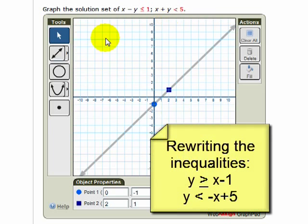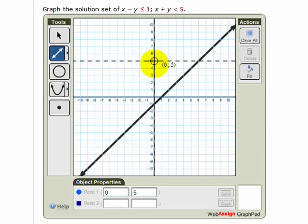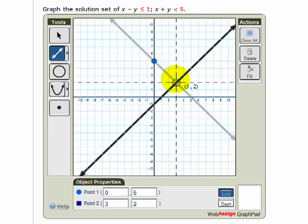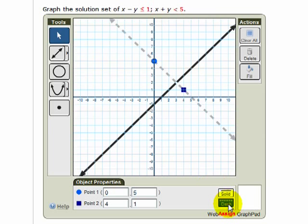My boundary line for the second inequality, I choose again that I want a line. And this one has a y-intercept of 5 and a slope of negative 1. So I go ahead and plot that using two points. And then the second line I need to switch to a dashed boundary line. So I'll switch that using the dashed option down here.